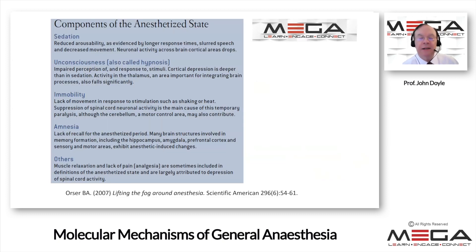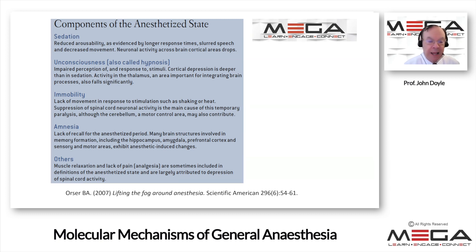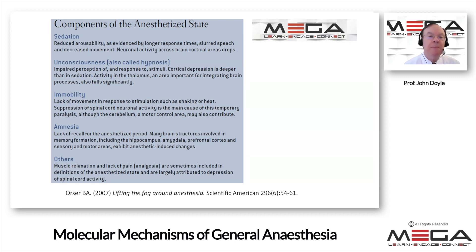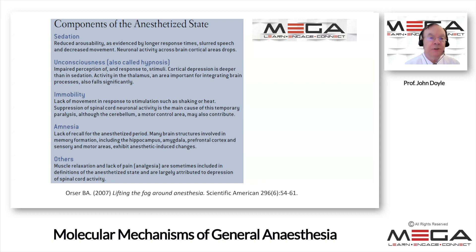We now know that there are five main pillars to anesthesia: sedation, unconsciousness, immobility, amnesia, and for many, muscle relaxation and lack of pain are sometimes included, depending on how you like to categorize it. These are primarily the components of the anesthetized state — what your goals are in providing anesthesia. Not all goals are equally important depending on the clinical situation.